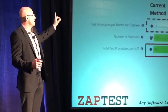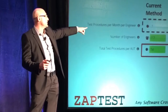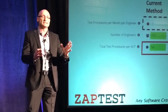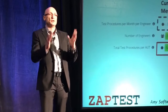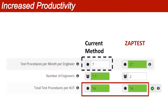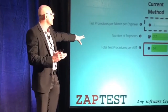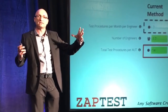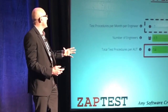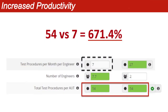If we multiply using two engineers automating with ZepTest, we get 54 procedures a month. That's two engineers able to automate with ZepTest, versus any other tool which would require almost 8 people on the team to automate the same thing. That leaves you 54 versus 7 — a 671.4% productivity increase just with two people using ZepTest for test automation.